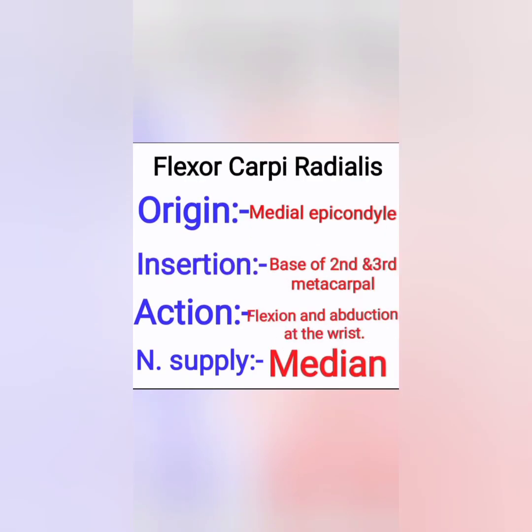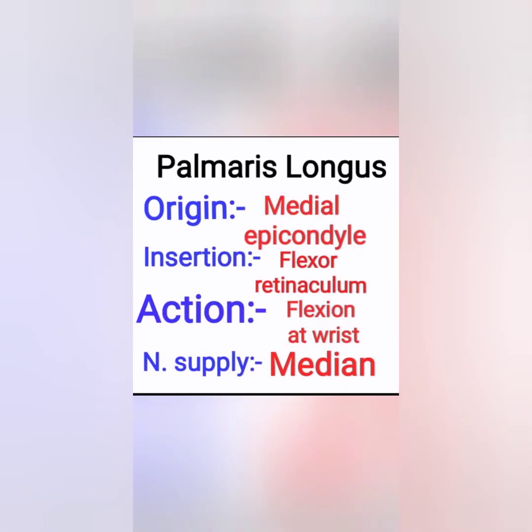The second muscle is flexor carpi radialis. It also originates from the medial epicondyle and inserts into the second and third metacarpal. Its action is flexion and abduction at the wrist, and it is supplied by the median nerve.